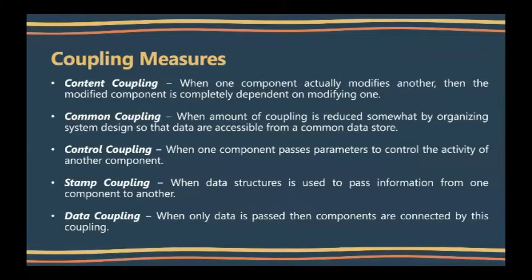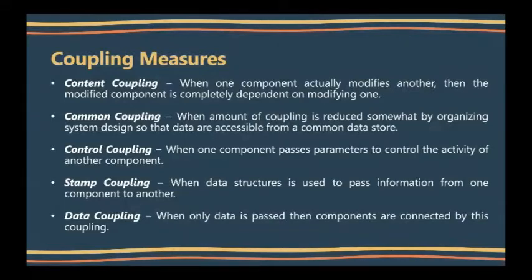Coupling measures. Content coupling is when one component actually modifies another; the modified component is completely dependent on the modifying one. Common coupling is when the amount of coupling is reduced by organizing system design so that data are accessible from a common data store. Control coupling is when one component passes parameters to control the activity of another. Stamp coupling is when a data structure is used to pass information from one component to another. Data coupling is when only data is passed and components are connected by this coupling.